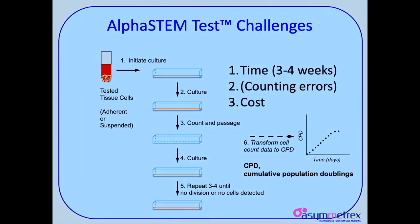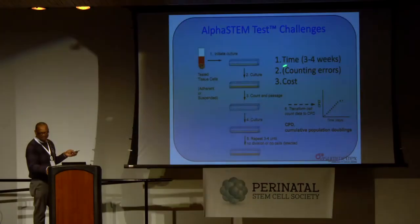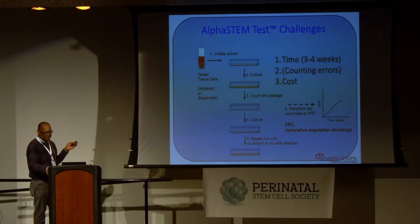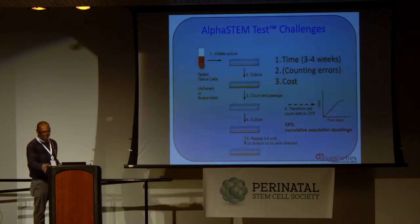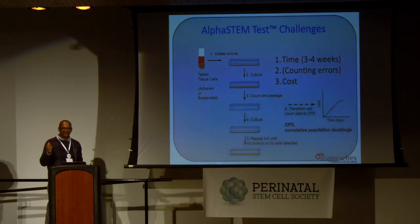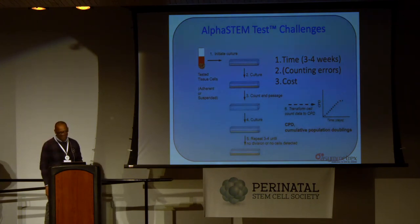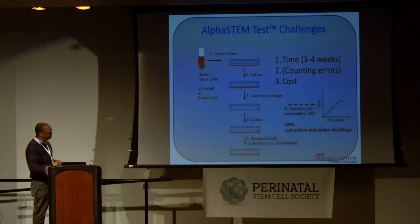We've been very excited about this, but there are challenges. The method has challenges, and I want to talk about them now and close with. Time — if you didn't take it away from those slides, it takes us right now about three to four weeks. You start a sample today, it'll be three to four weeks before you have stem cell count, and that's really a problem for a good tool.